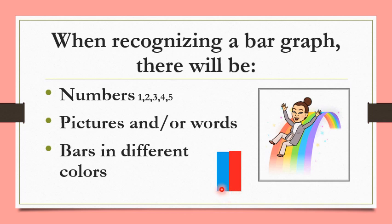These are how the bars look - they're like a tall rectangle and they will always be in different colors so that they don't confuse you. So whenever you see these bars you will know that that is possibly a bar graph.